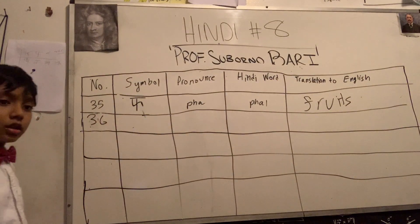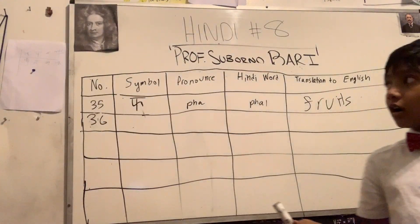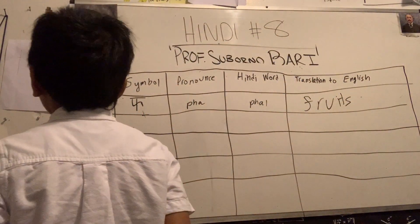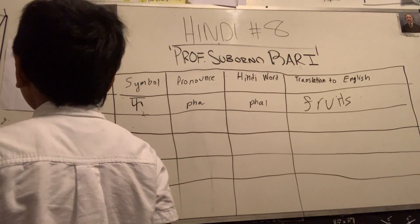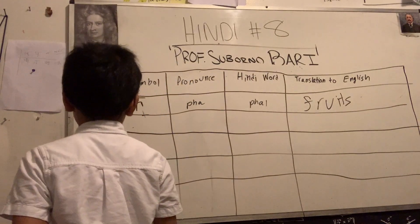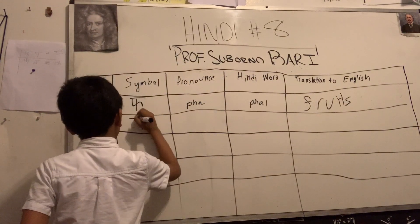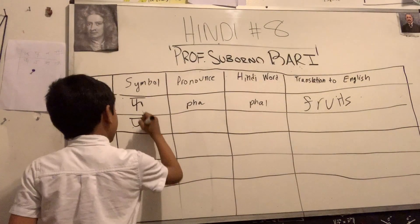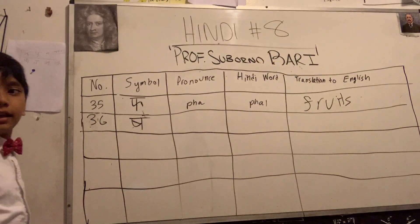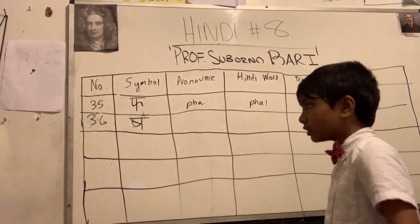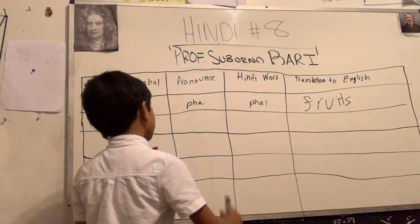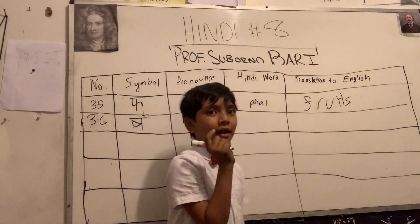Now we're going to go to 36. What's for 36? This hit me at this moment — it's kind of like a path or a P, but with something coming across it, a little line. This is pronounced 'ba' with a little lip smack in there.